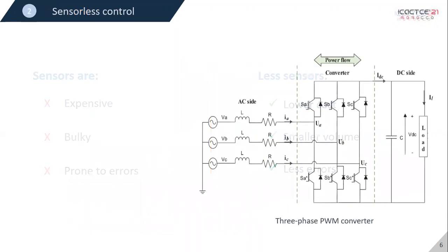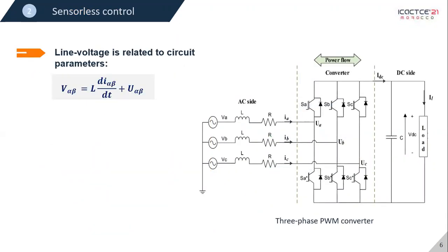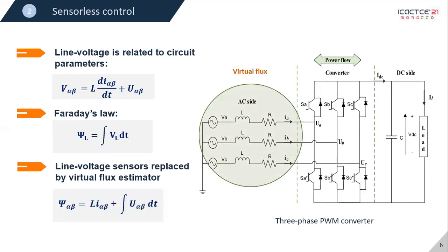Now if we look at the rectifier circuit we can see that the line voltage is related to the remaining converter parameters. Now if we assume that the line voltage is generated by virtual flux we can then remove the line voltage sensors and replace them by virtual flux estimation.